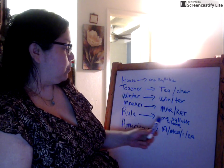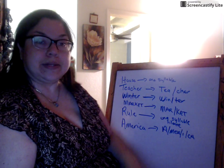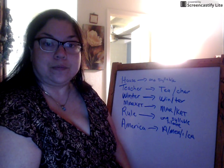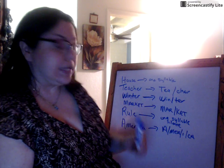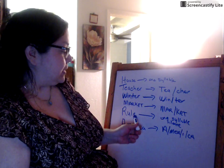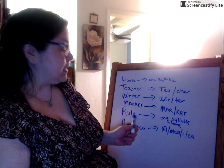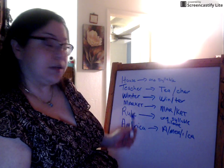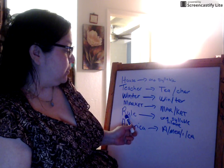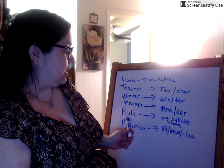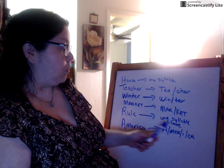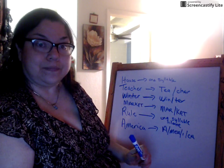And then we have the word 'rule.' How many syllables is that? One. Now 'rule' has an E that's silent, but it's still only going to be one syllable.